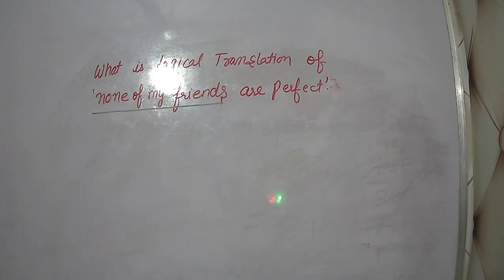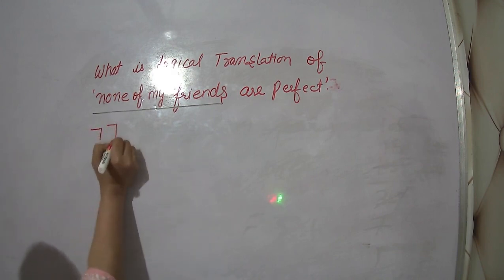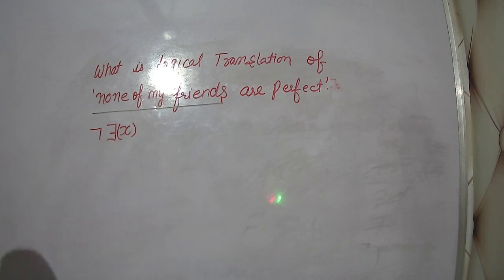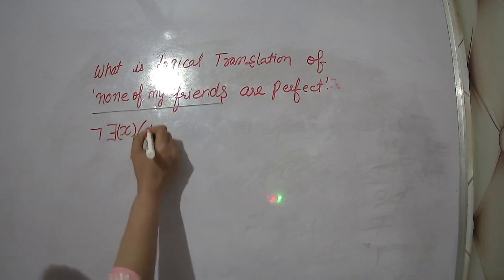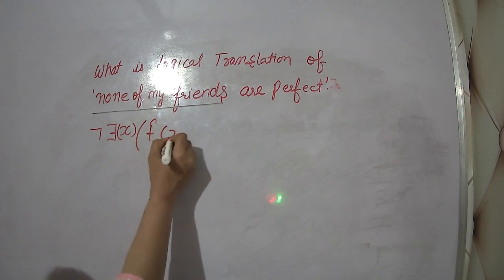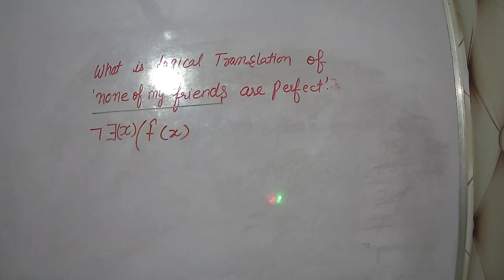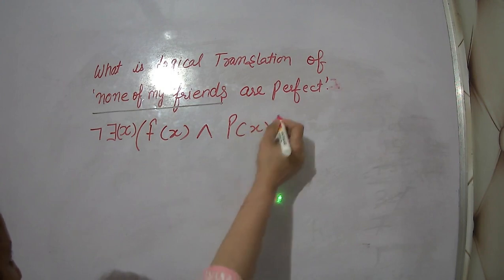For this we will use negation of there exists. In brackets, for friends we will use F(x) for friends of x, and P(x) for perfect x.